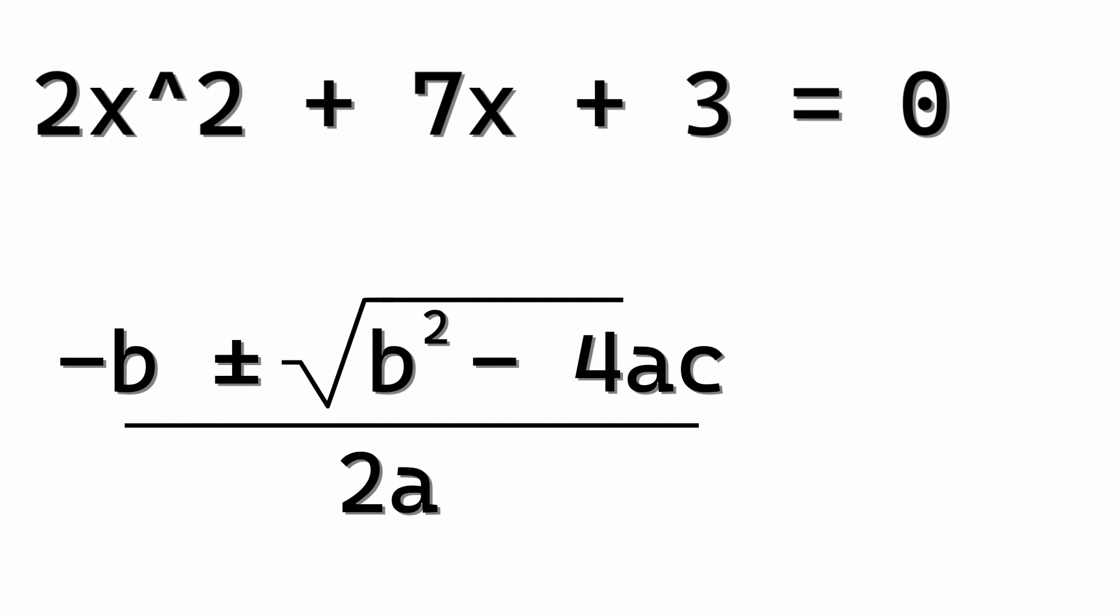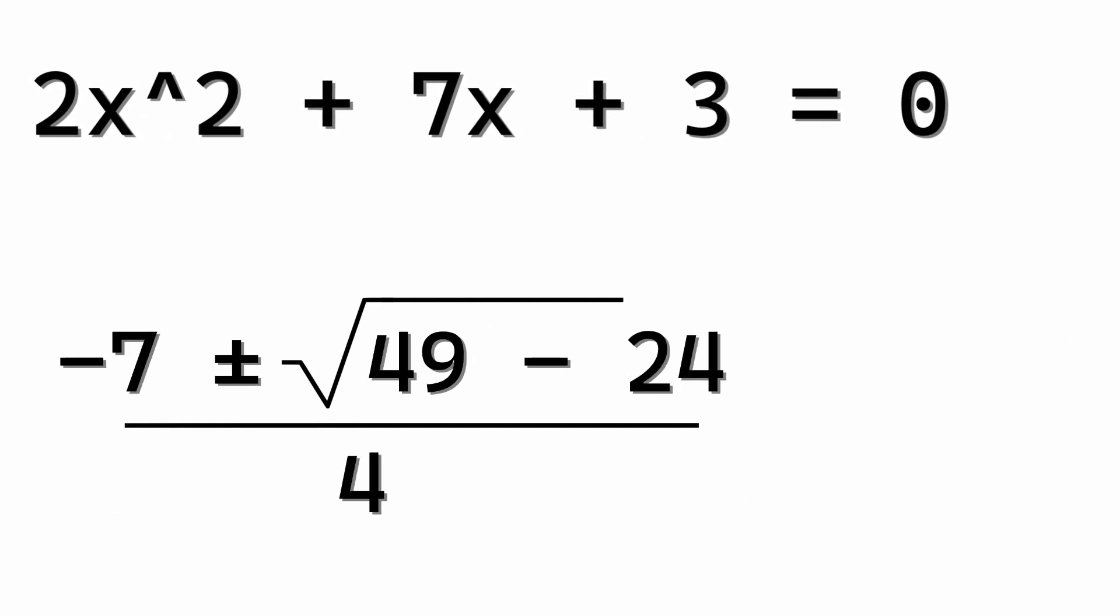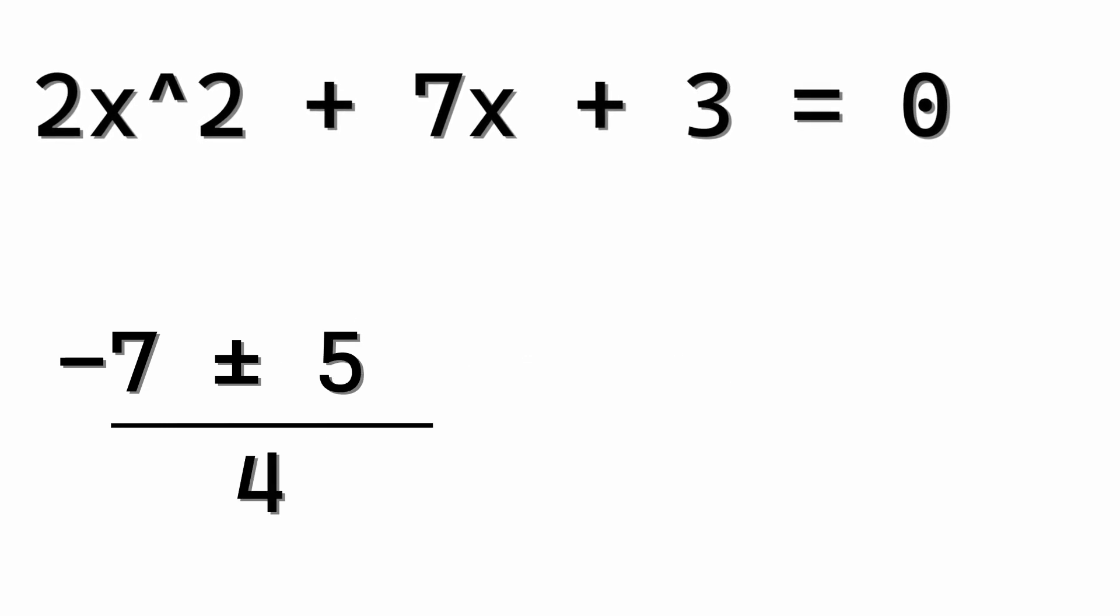So, using the formula, we can plug in a, b, and c. a equals 2, b equals 7, and c equals 3. Now that they're plugged in, we're able to find the two answers, negative 3 and negative 0.5.